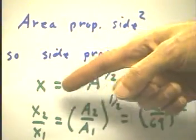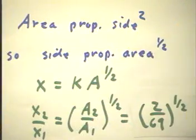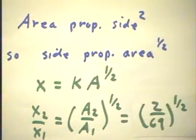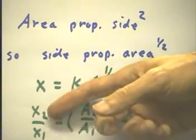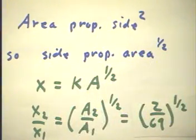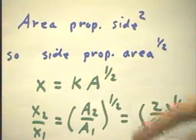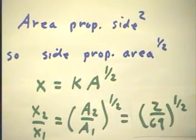So we can write x equals k times a to the one-half. The side is proportional to the one-half power of the square root of the area. And this tells us that x2 over x1, the ratio of the sides, is just going to be the square root of the ratio of the areas, or the one-half power of the ratio of the areas.